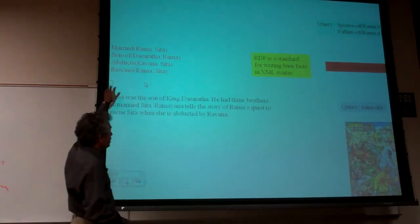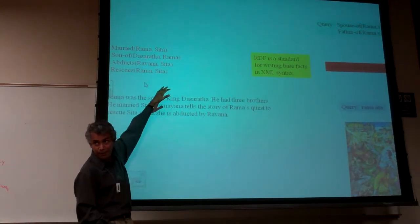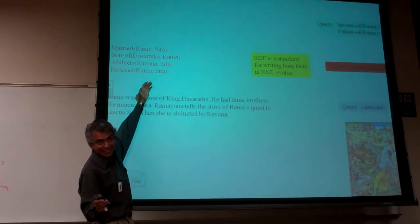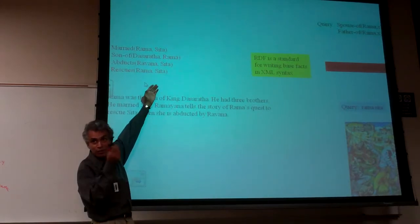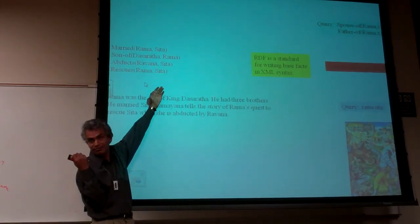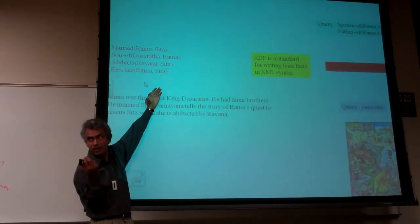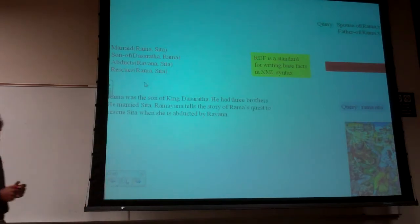Now, if I write this, if I write all those pieces of facts here, and then Rama and Sita, God forbid, divorce, then you have to go back and change all these additional spouse of relations you wrote. This is the usual modularity question. So what you really want to do is write one background piece of information.